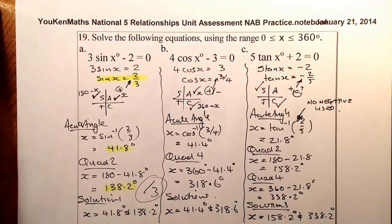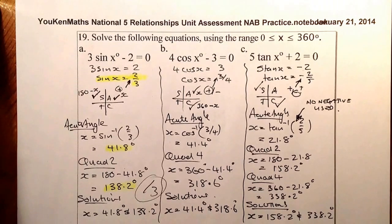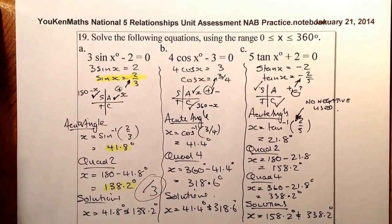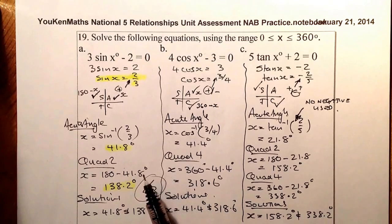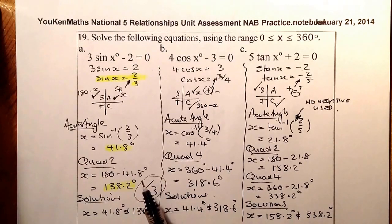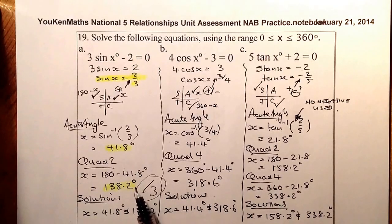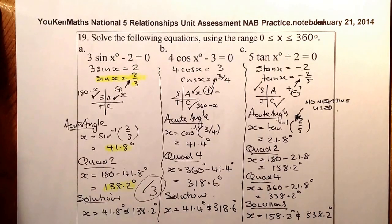Three marks for that question. Remember, six marks total across the three questions — make sure you try to get all six. Question 19 is particularly important with three marks. Good luck on this outcome, outcome 1.5.